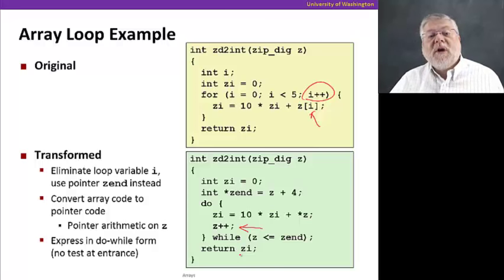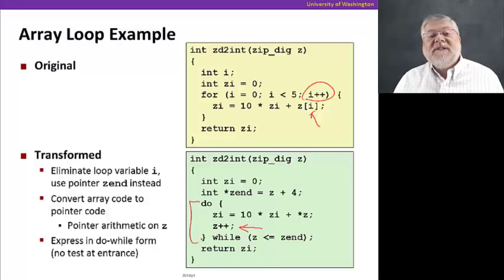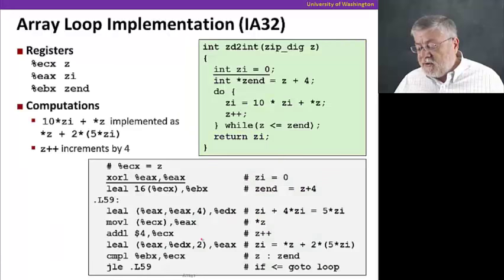The other transformation is it's taken our for loop and transformed it into a do loop with the test at the end to see whether we've reached the last address of the array. That's our transformed C code. And now we can go on to see the actual assembly code that's generated.